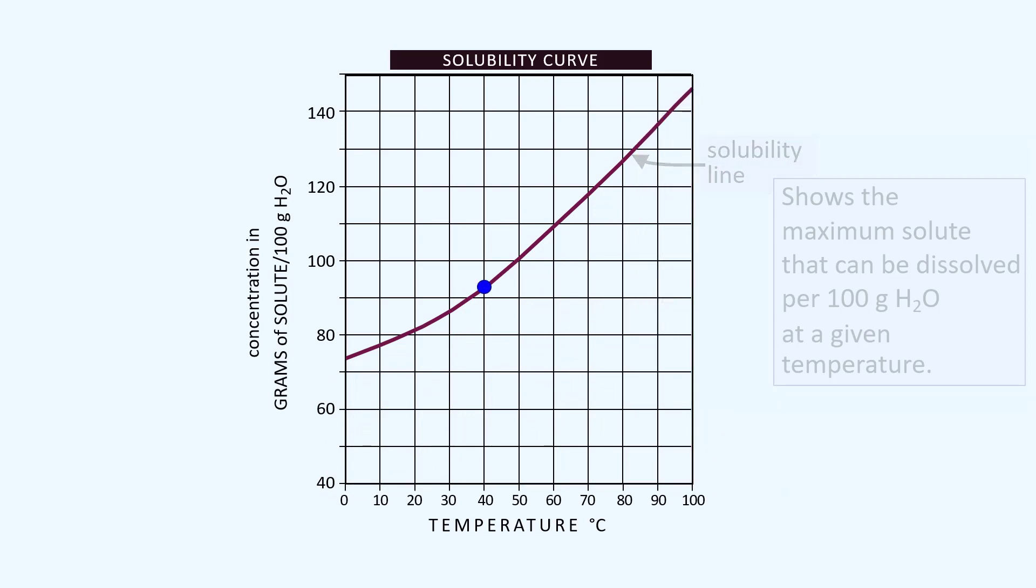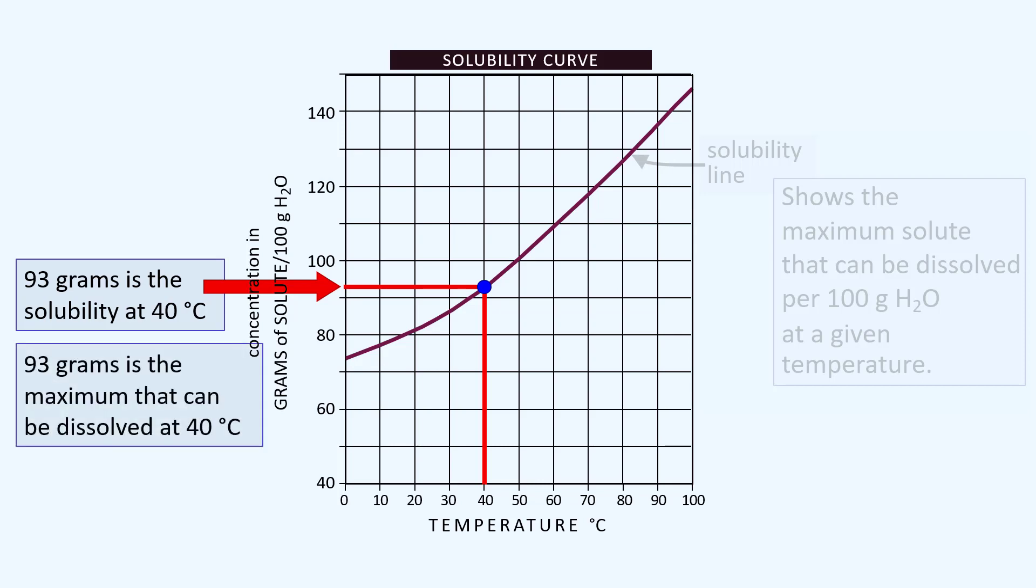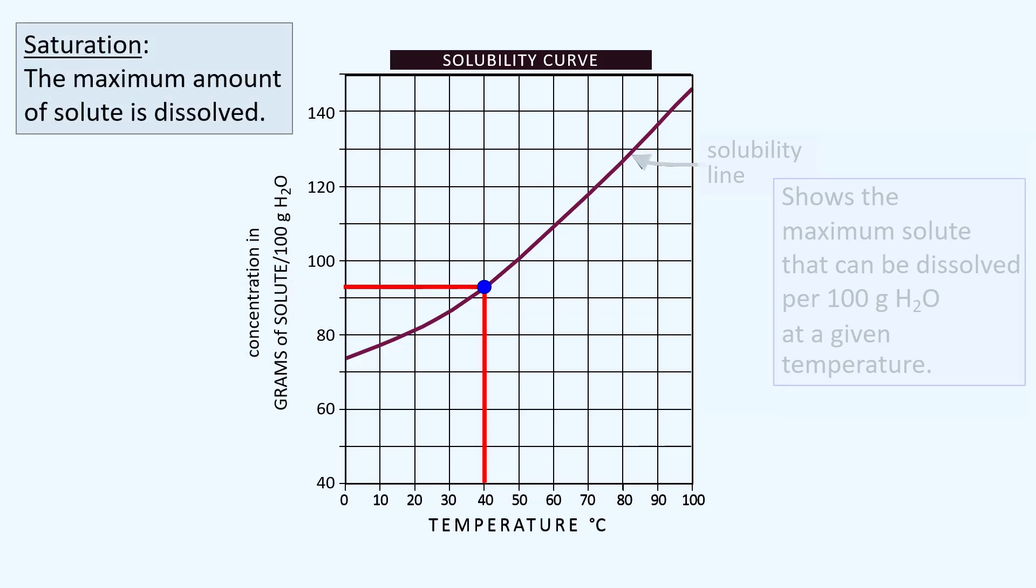For example, if we have a maximum amount dissolved at 40 degrees Celsius, the amount that can dissolve is right on the y-axis. So 93 grams is the solubility of the substance at 40 degrees Celsius. The term saturation tells us that the maximum amount of solute is dissolved. So in these conditions, 93 grams saturates 100 grams of water at 40 degrees Celsius.